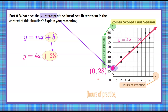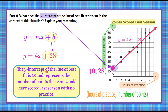Any X-coordinate represents hours of practice (from the X-axis label), and Y represents the number of points (from the Y-axis label). So the Y-intercept represents 0 hours of practice and 28 points scored. In a sentence: the Y-intercept of the line of best fit is 28, and it represents the number of points the team would have scored last season with no practice.